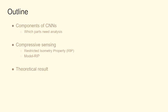First I'll tell you what components of the CNNs we're going to focus on, which ones we need to analyze, and which ones we're going to argue away. I'll tell you a little bit about compressive sensing and what form of the restricted isometry property we use — it's a model form, a model RIP. Then I'll give you the theoretical result, which is basically that if you turn the convolution matrix on its side — take its transpose — that matrix satisfies a certain model RIP, and images are sparse.